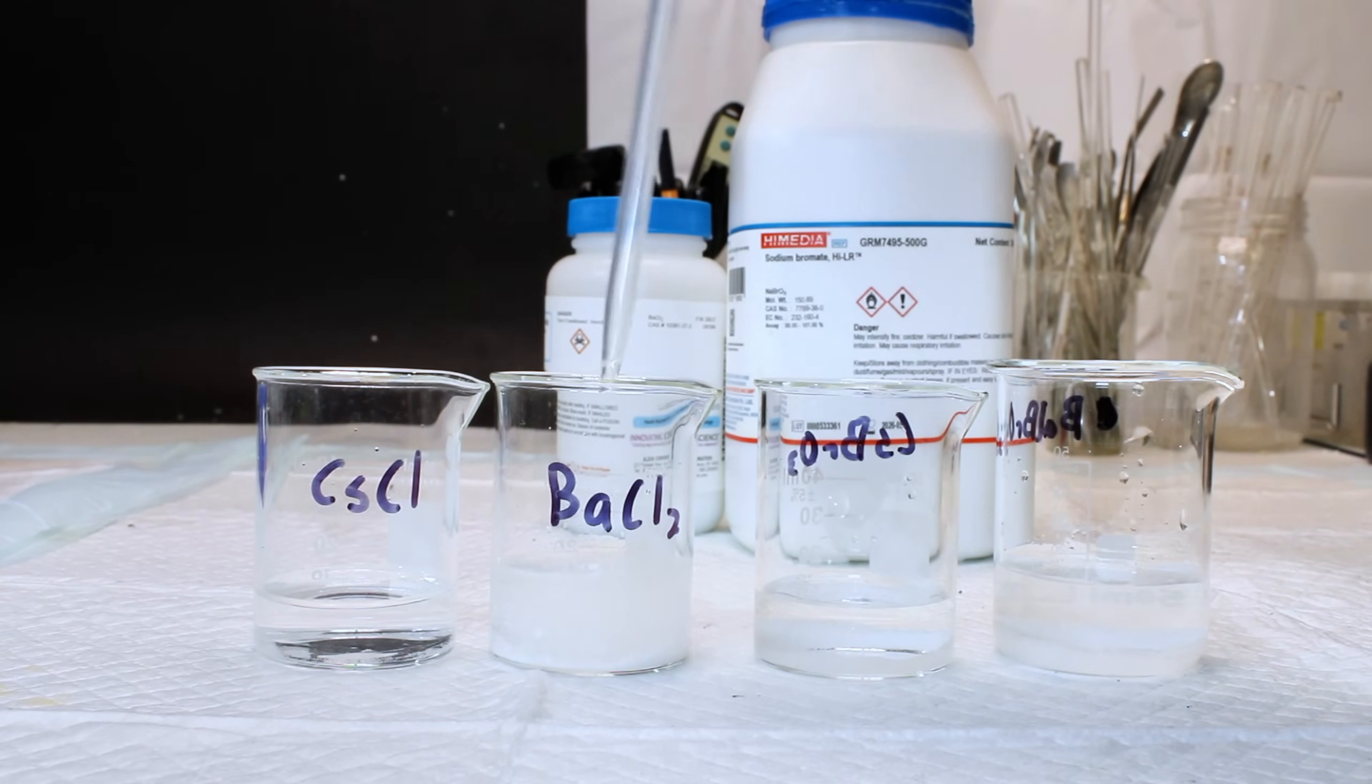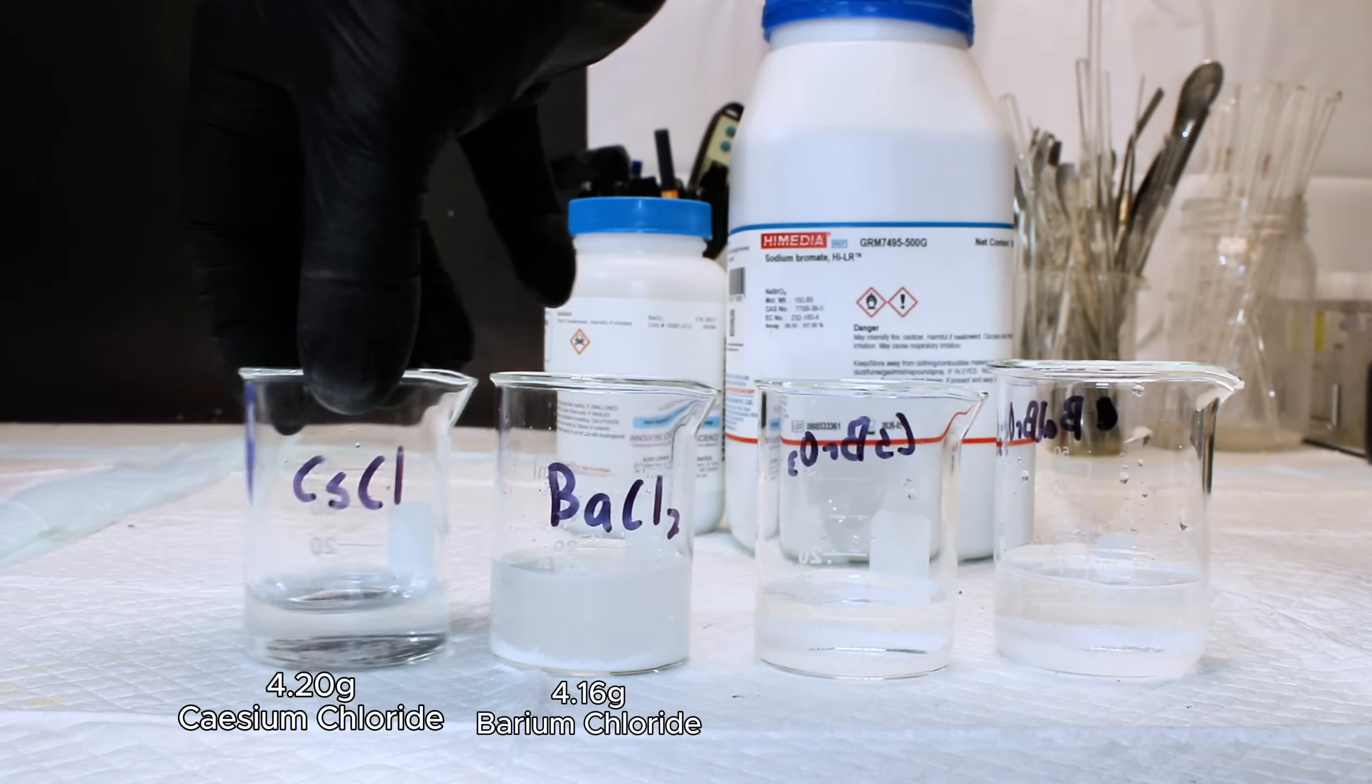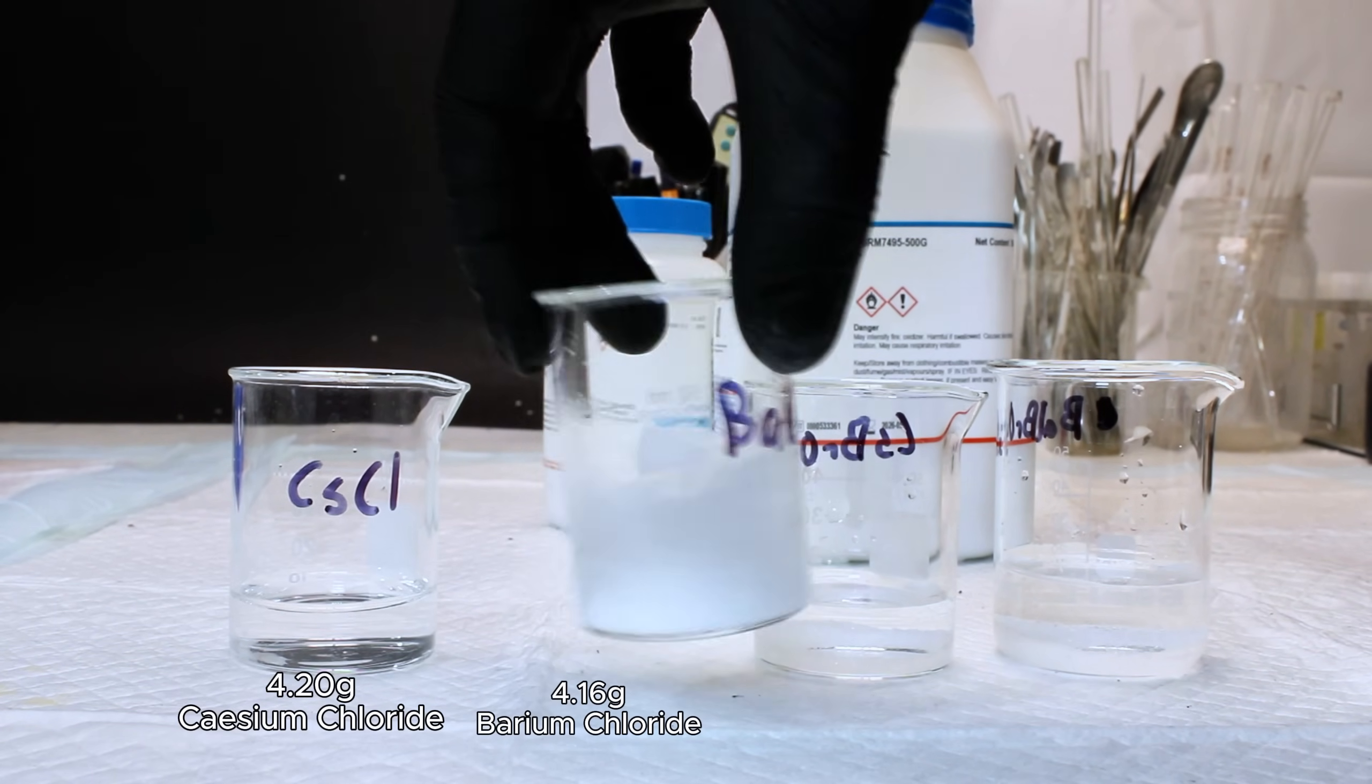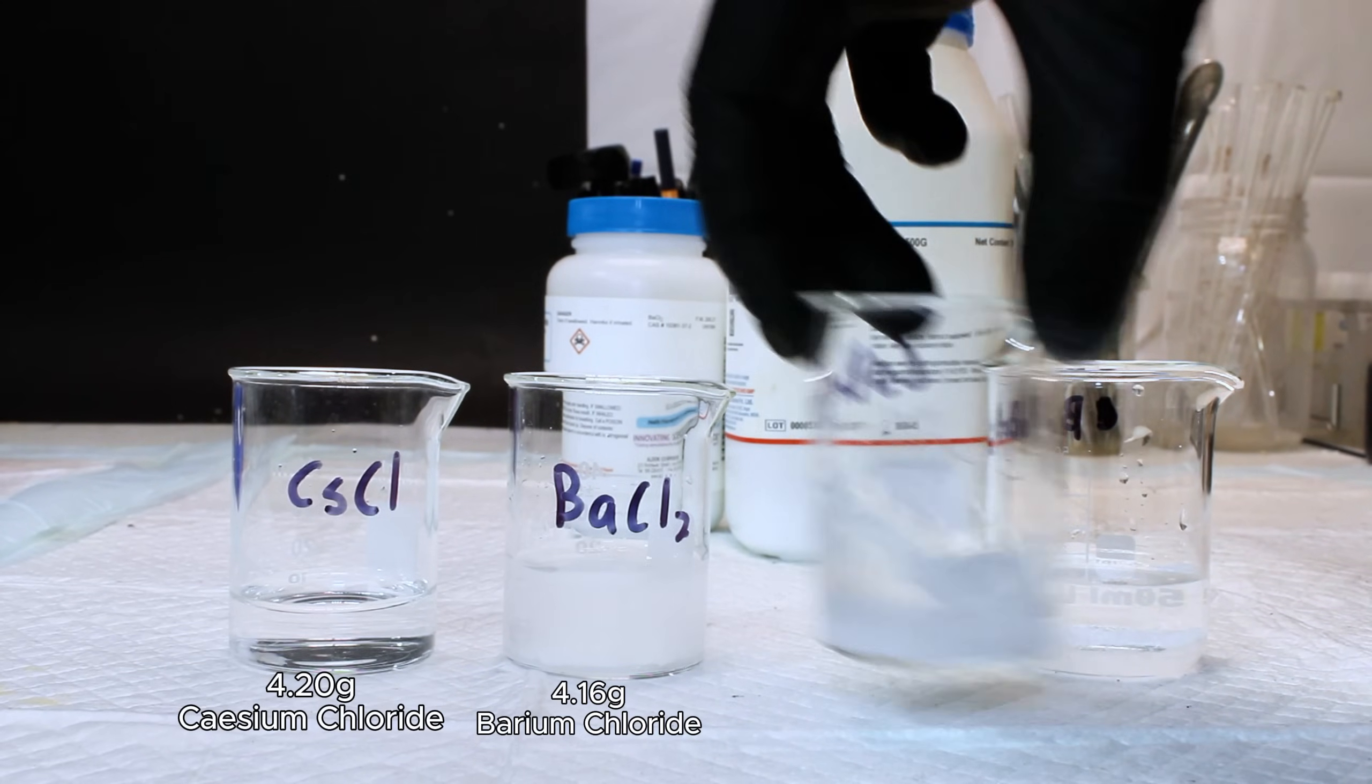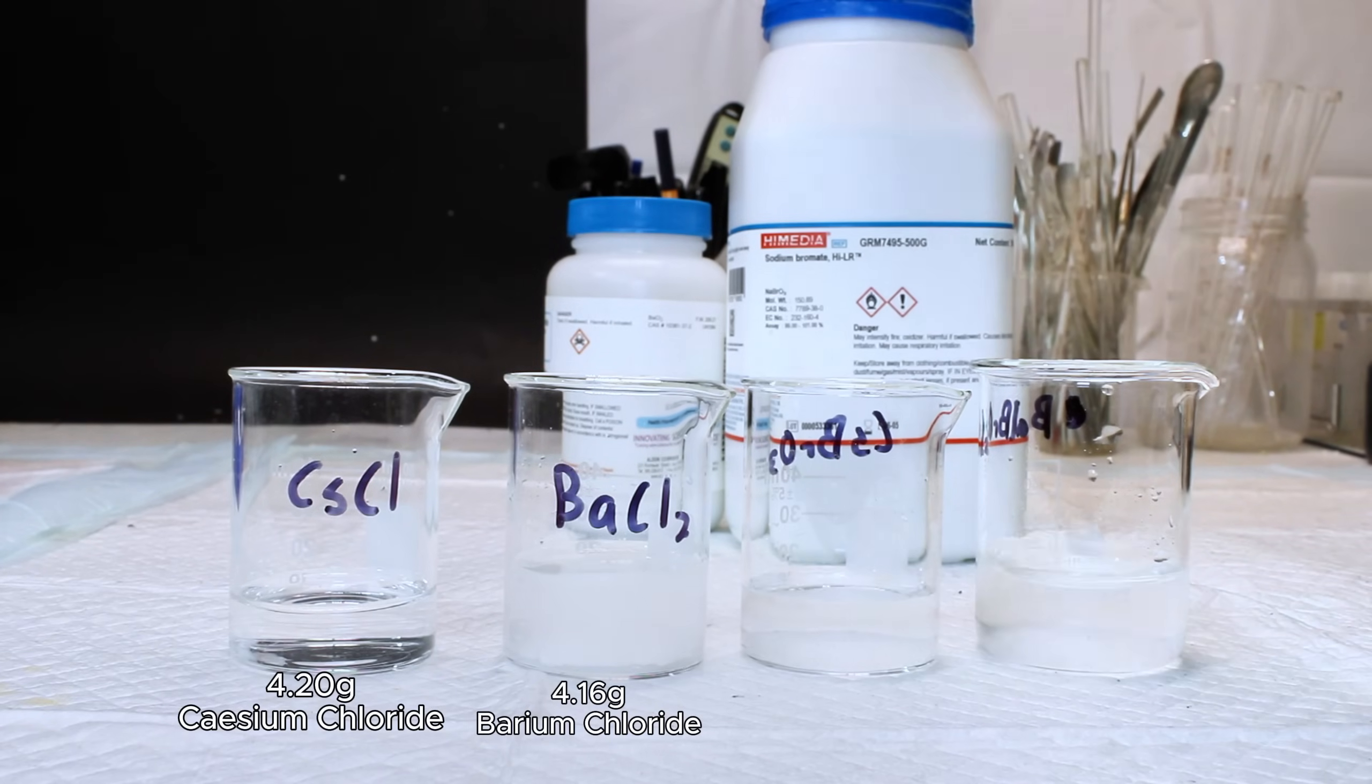To get started, I first added 4.16 grams of barium chloride and 4.2 grams of cesium chloride to two separate beakers. Barium salts burn with a bright green flame, and cesium salts burn with a bright violet flame. The issue, though, is that chloride salts can't provide oxygen, so I needed to make them into their bromate salts.